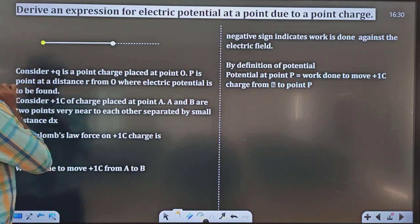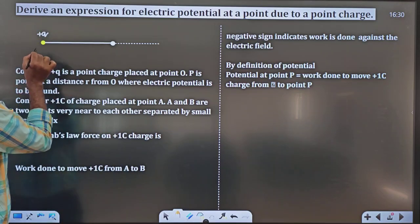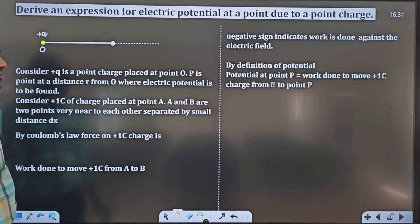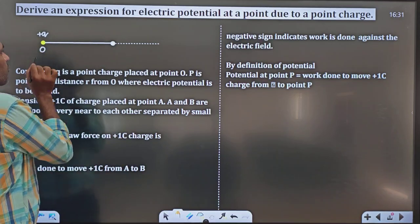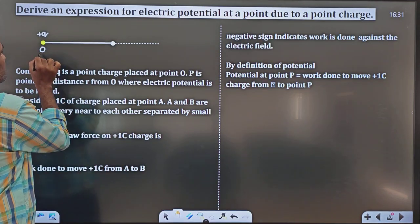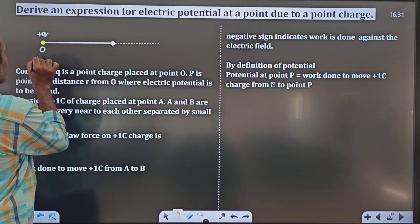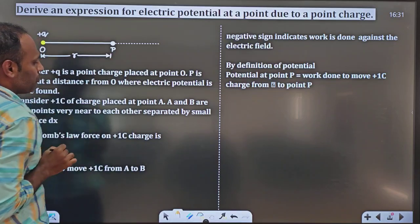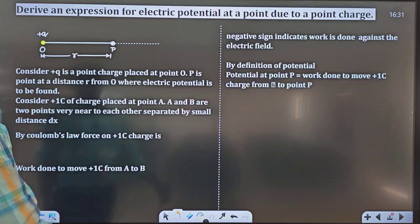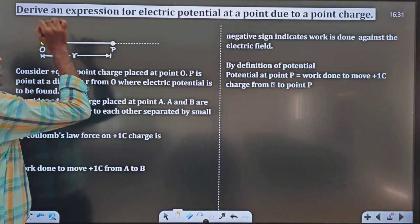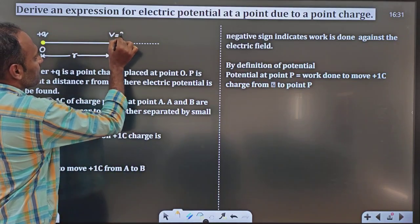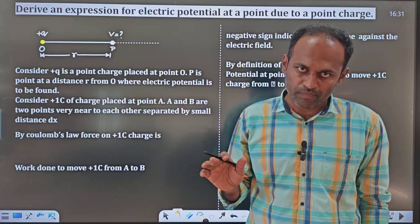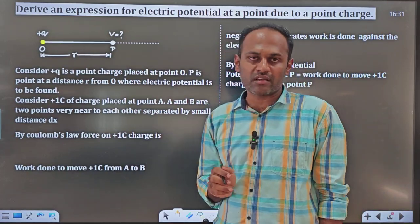There is a charge called plus Q at a point called O. At this point O, we have kept a charge called plus Q. From this point O, at a distance R, I am taking one more point called P. We want to find how much is the potential at point P due to the charge plus Q, which is at a distance R from that charge. That is what we want to derive.